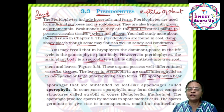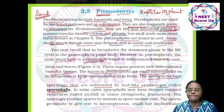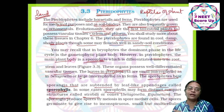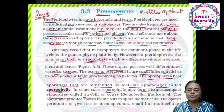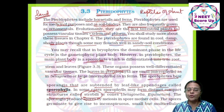Sporophytes bear sporangia that are subtended by leaf-like appendages called sporophylls — spore-bearing leaves are called sporophylls. Vegetative leaves are called tropophylls. In some cases, sporophylls may form distinct compact structures called strobili. Strobili are cone-like structures in which sporangia are arranged.